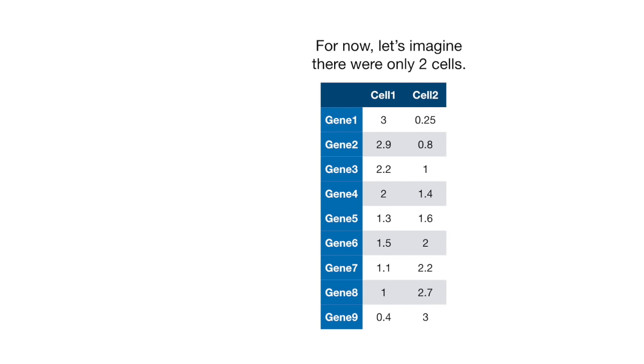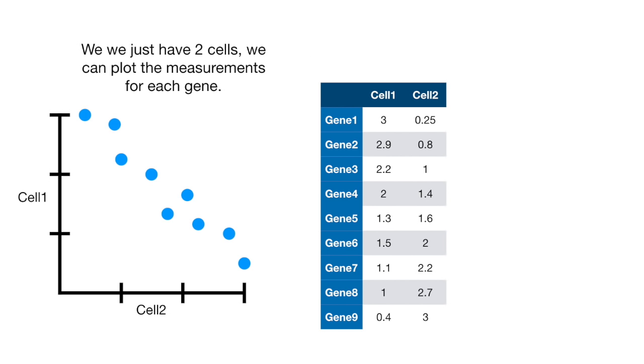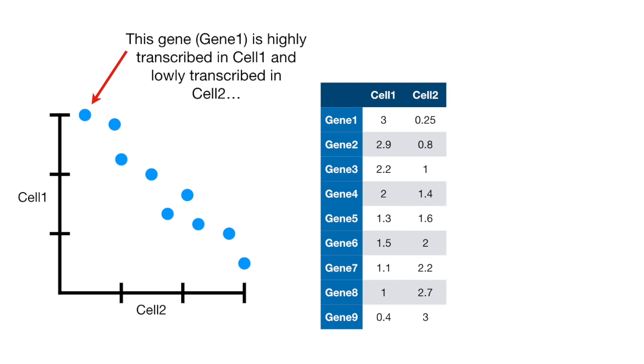If we just have two cells, then we can plot the measurements for each gene. This gene, gene 1, is highly transcribed in cell 1 and lowly transcribed in cell 2.